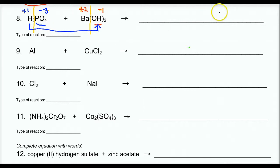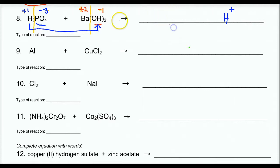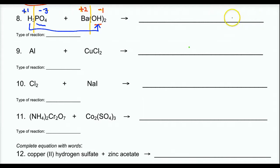So take an H — positive 1 — and it's going to hook up with one of these hydroxides. Do not write H2 negative 1. Each cluster of OH is negative 1. So I'm going to just bring one of them to the table. Negative 1 plus positive 1 — we're going to crisscross. You need one of each to make this work, and this makes H2O, or HOH.